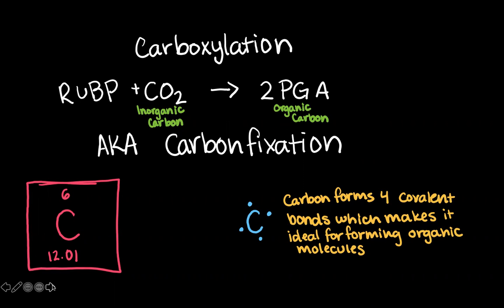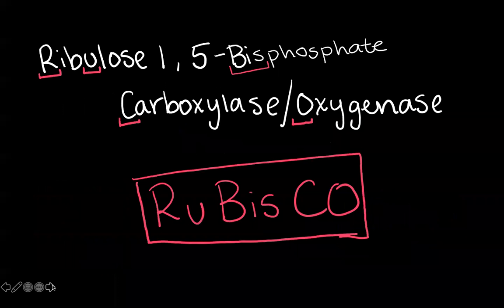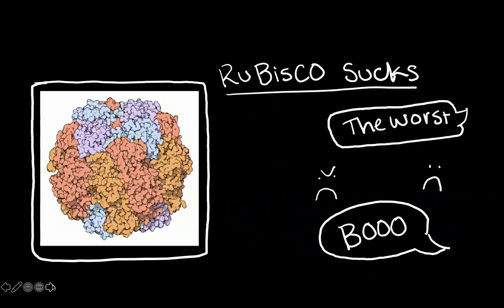And this is a really important step because it's adding carbon to a biomolecule. Carbon is so important for life because it makes those four covalent bonds that allow you to make really versatile and useful molecules. The enzyme that catalyzes this reaction is called ribulose 1,5-bisphosphate carboxylase oxygenase, also known as rubisco.